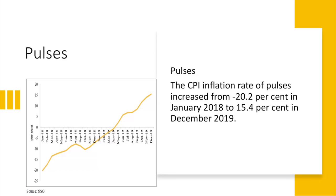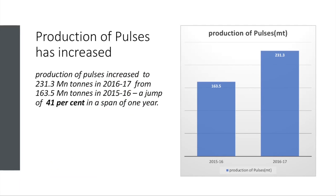Let's start with the reasons for pulses inflation, as pulses are a major contributor to food inflation. As you can see in this graph, the rate of pulses inflation went from the negative zone, minus 20% in 2018, to the positive zone, plus 15.4% in 2019 — a drastic change in prices. Interestingly, the production of pulses was actually increasing — from 163.5 million tons in 2015-16 to 231 million tons in 2016-17, an increase of 41% in production within just one year.